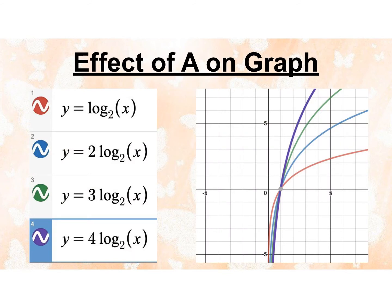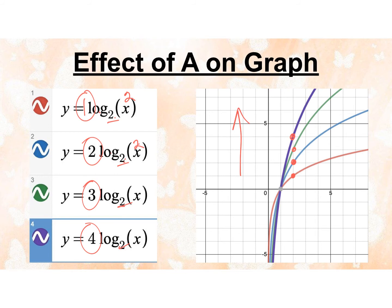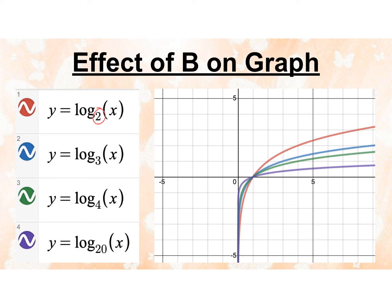Looking at the effects of a on the graph: I have all log base 2 but I've changed a from 1 to 2 to 3 to 4. When x is 2, log base 2 of 2 is 1. At a equals 1, I'm at the point 2, 1. In the blue graph with a equals 2, I'm at 2, 2. Green graph, up at 3. Purple graph, up at 4. So as a gets bigger, it stretches the graph up. For the effects of b, or the base: changing my base from 2 to 3 to 4 to 20 shifts the graph horizontally. On the red graph I'm at 2, 1; blue at 3, 1; green at 4, 1; and a base of 20 would be way off the graph — it gets pulled further right as b increases.